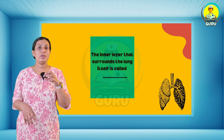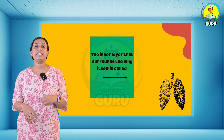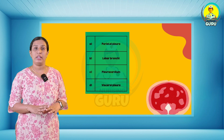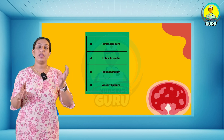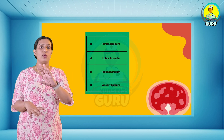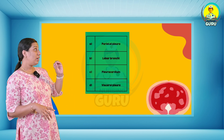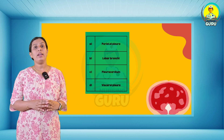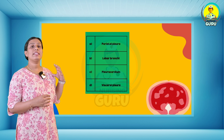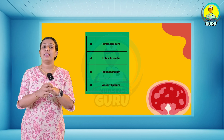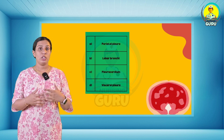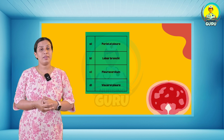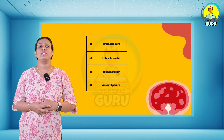Fifteenth question: the inner layer that surrounds the lungs itself is called what? Four options: parietal pleura, lobar bronchi, pleurocardium, and visceral pleura. You can find the answer and write it in the comment box. The answer is option D — visceral pleura.